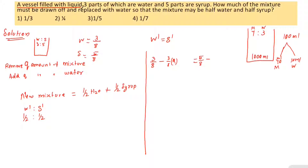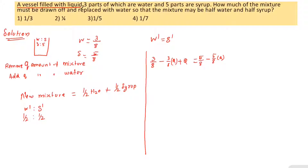We are going to replace the Q amount of mixture drawn off with water. The ratio of water and syrup after replacement gives us the equation to solve for Q.